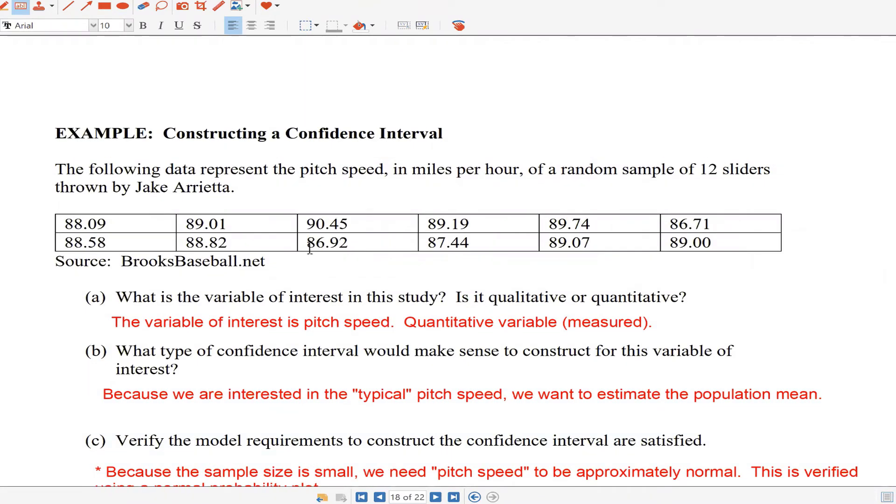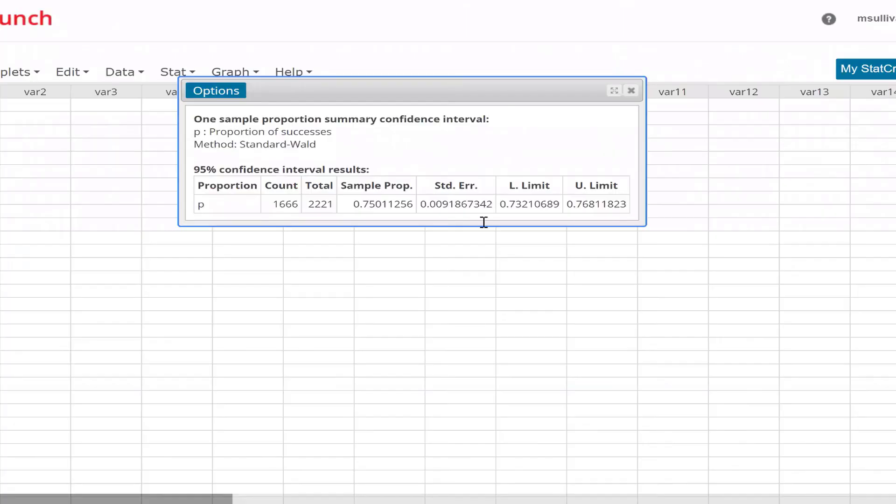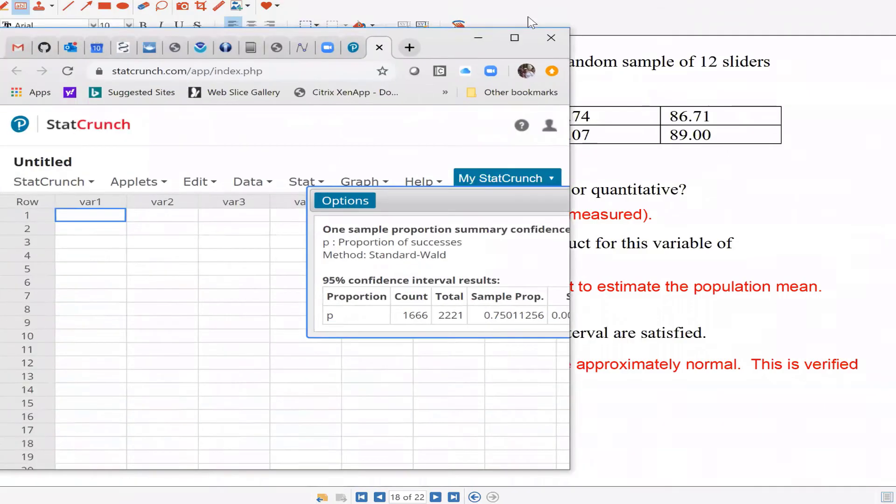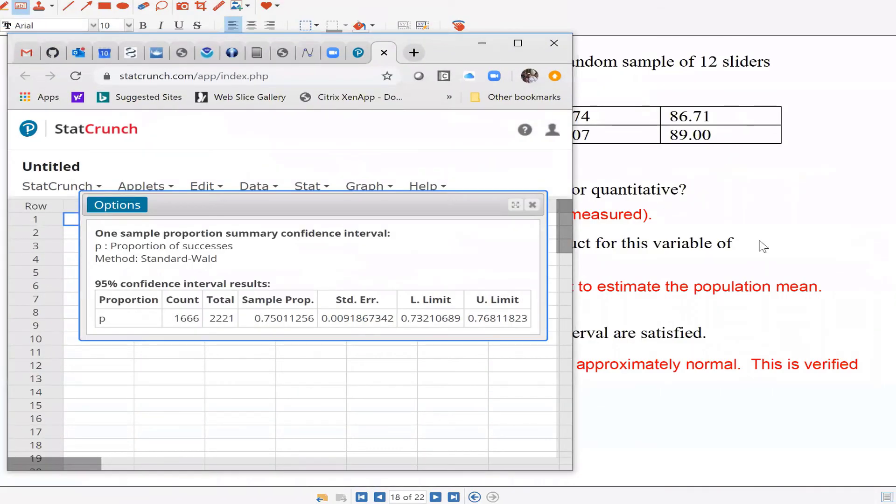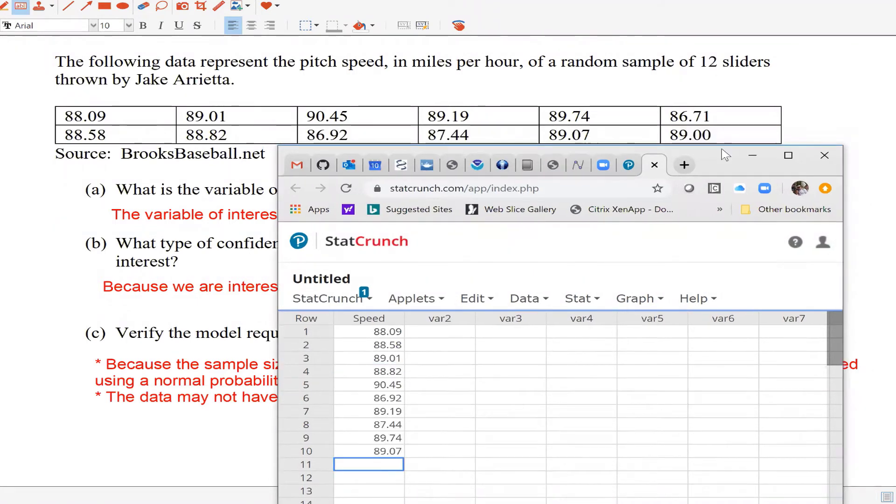What I have to do is take this data and load it into StatCrunch. In MyLab, you'll be able to just click that button to open the StatCrunch spreadsheet. We'll call this variable speed: 88.09, 88.58, 89.01, 88.80, 86.71, and 89.